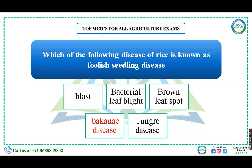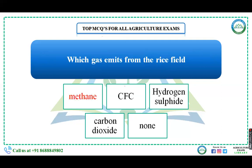Which disease of rice is known as the 'foolish seedling disease'? Options: Blast, Bacterial Leaf Blight, Brown Leaf Spot, Bakanae disease, or Tungro disease. Bakanae disease of rice is known as the foolish seedling disease. Similarly, there is one physiological disease in rice called Pansook disease. We must remember the diseases, types of symptoms, and causal organisms.